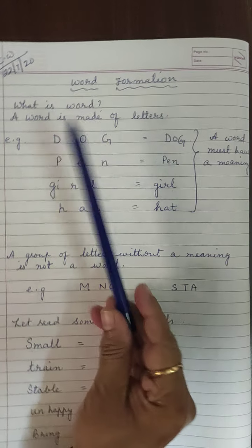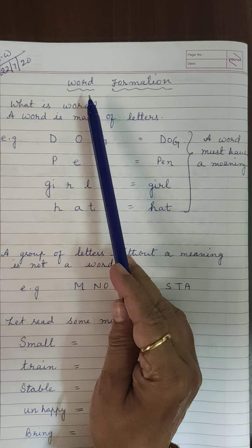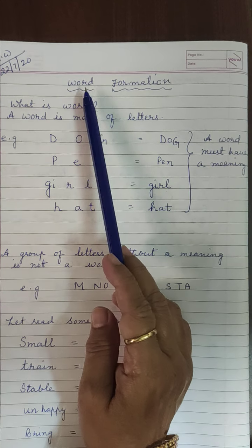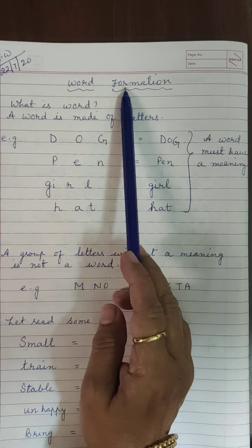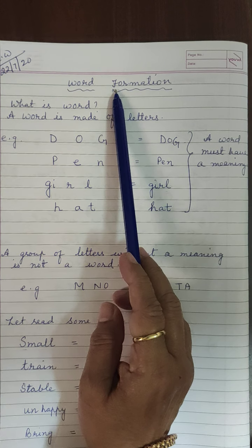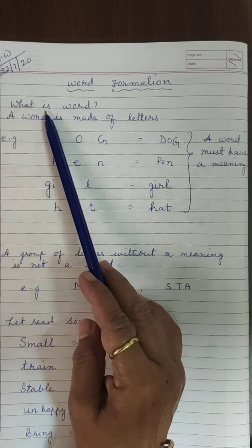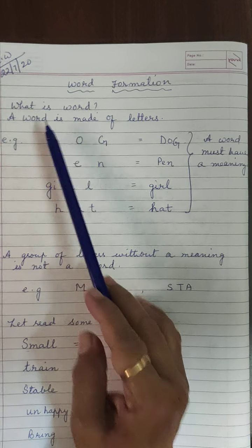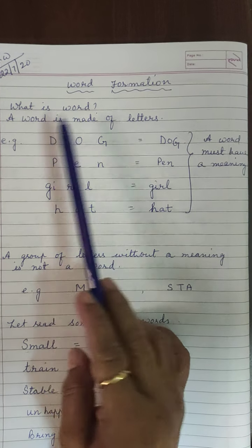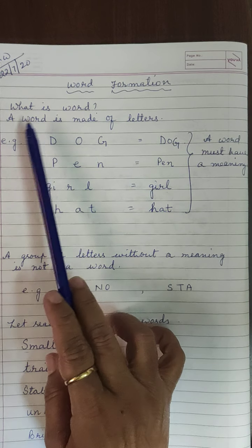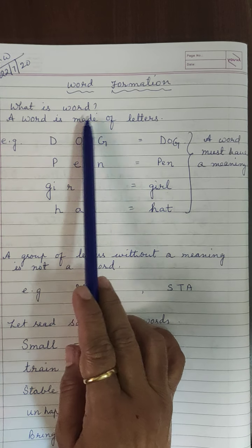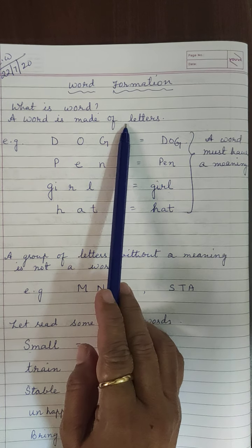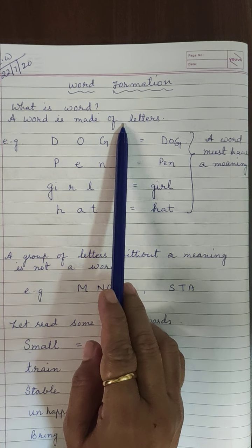So children, today we are starting word formation — how to form a word with the help of letters. Let us read first. A word is made of letters. With so many letters we can form a word.